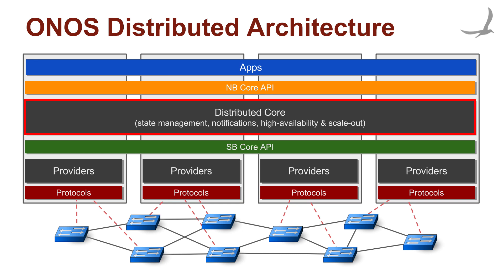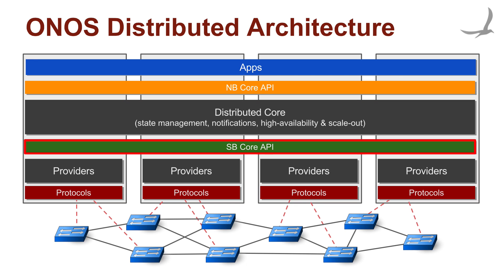The core is separated from the other tiers via two logically distinct interface boundaries. The south-facing interface is a high-level API through which the core interacts with the network environment. Rather than interacting with the environment directly, the ONOS core relies on protocol-specific adapters to conduct these interactions using the protocol of their choice, whether it is OpenFlow, NetConf, TL1, or even other available means such as CLIs.